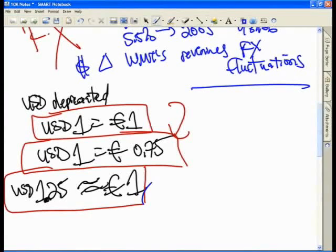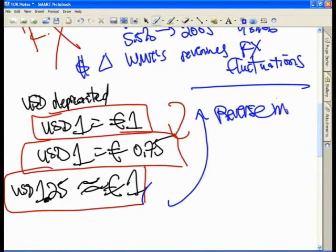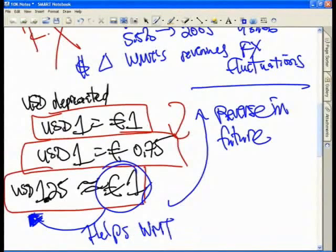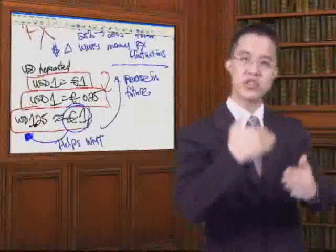However, what's important here is that in the future, if this amount were to ever reverse, if this were ever to reverse in the future, remember that if they were to make a dollar of sales internationally and get one euro, they can now get 1.25 US dollars. So this helps Walmart as the US dollar depreciates since they are a US-based company. The home currency is the US dollar.